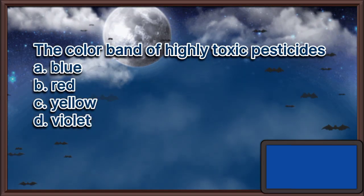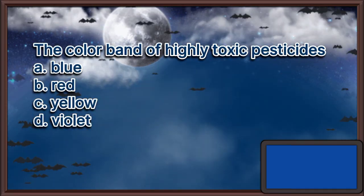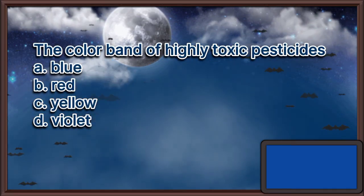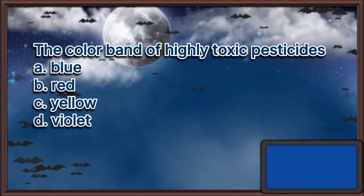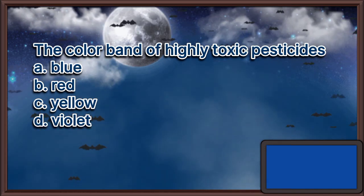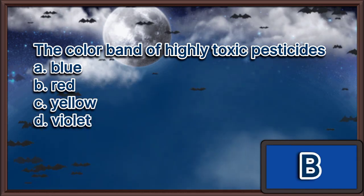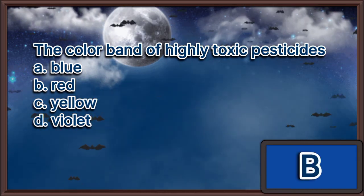The color band of highly toxic pesticides. A. Blue. B. Red. C. Yellow. D. Violet. The answer is letter B.